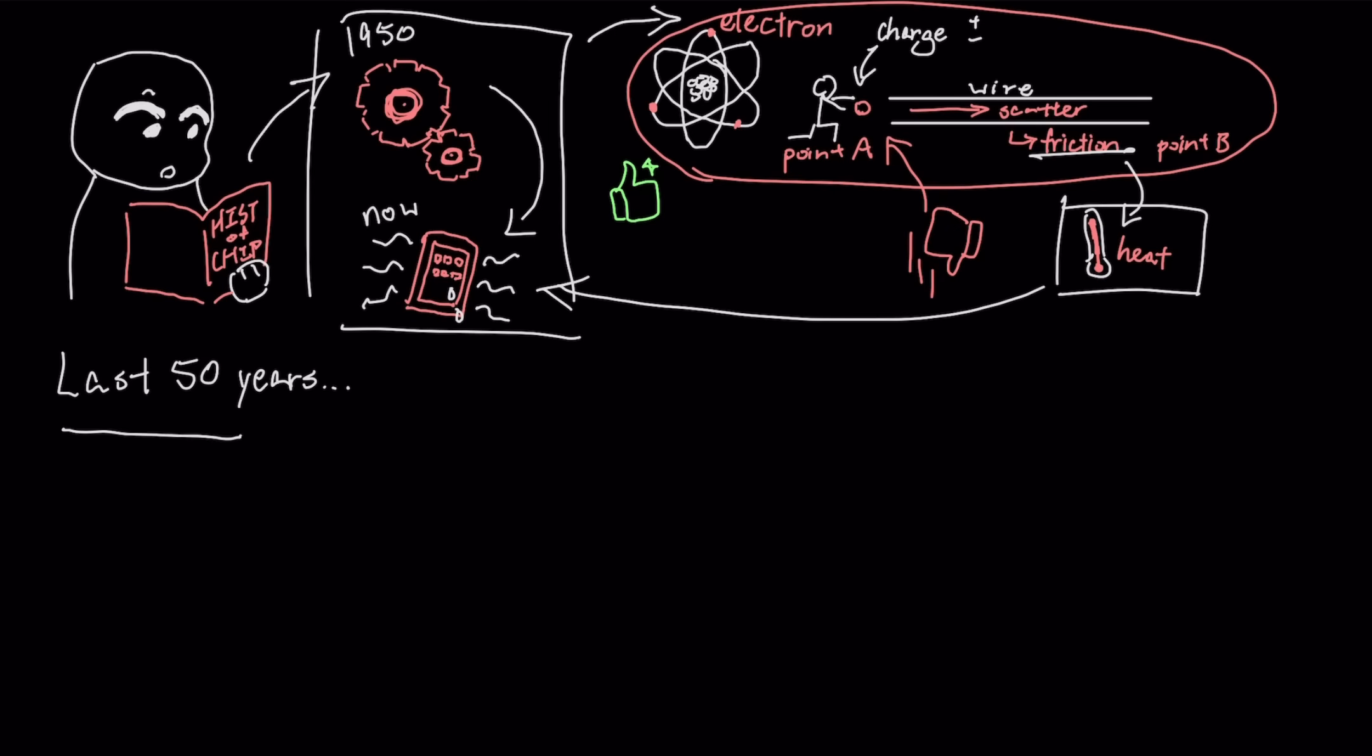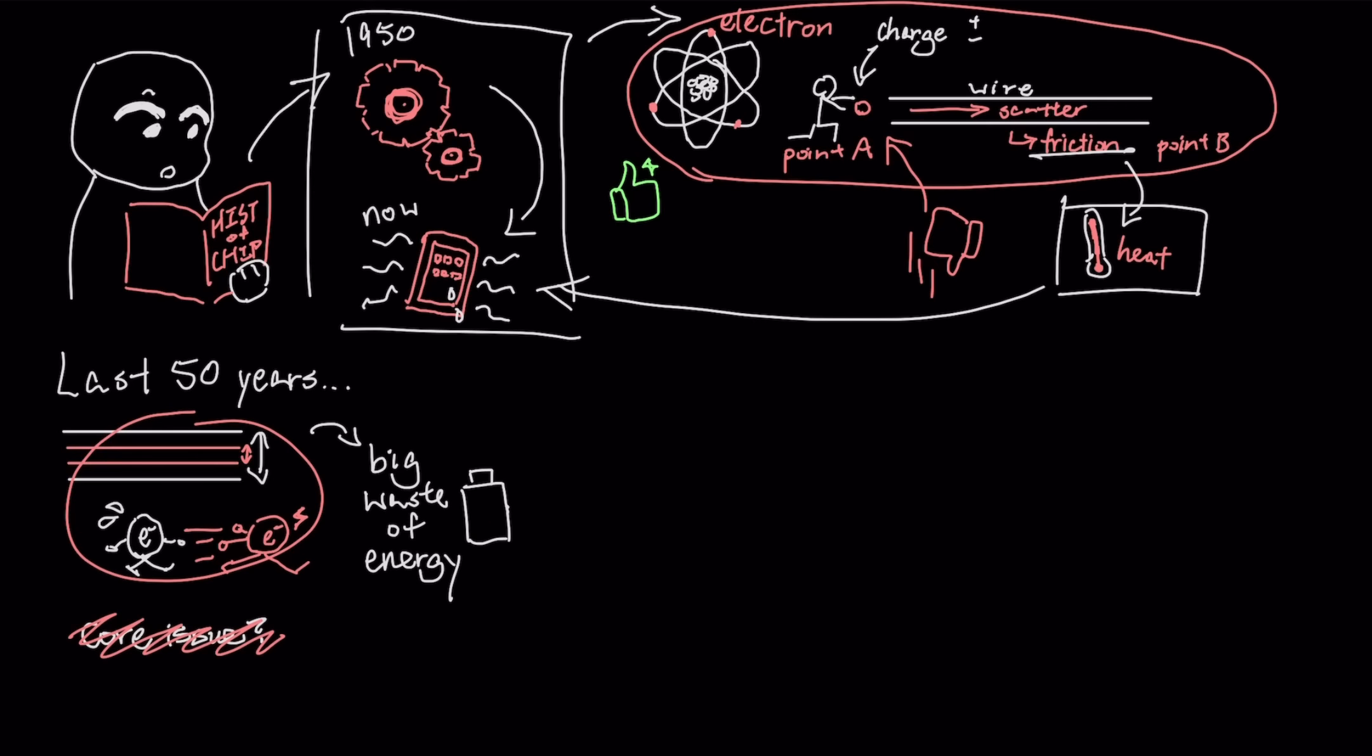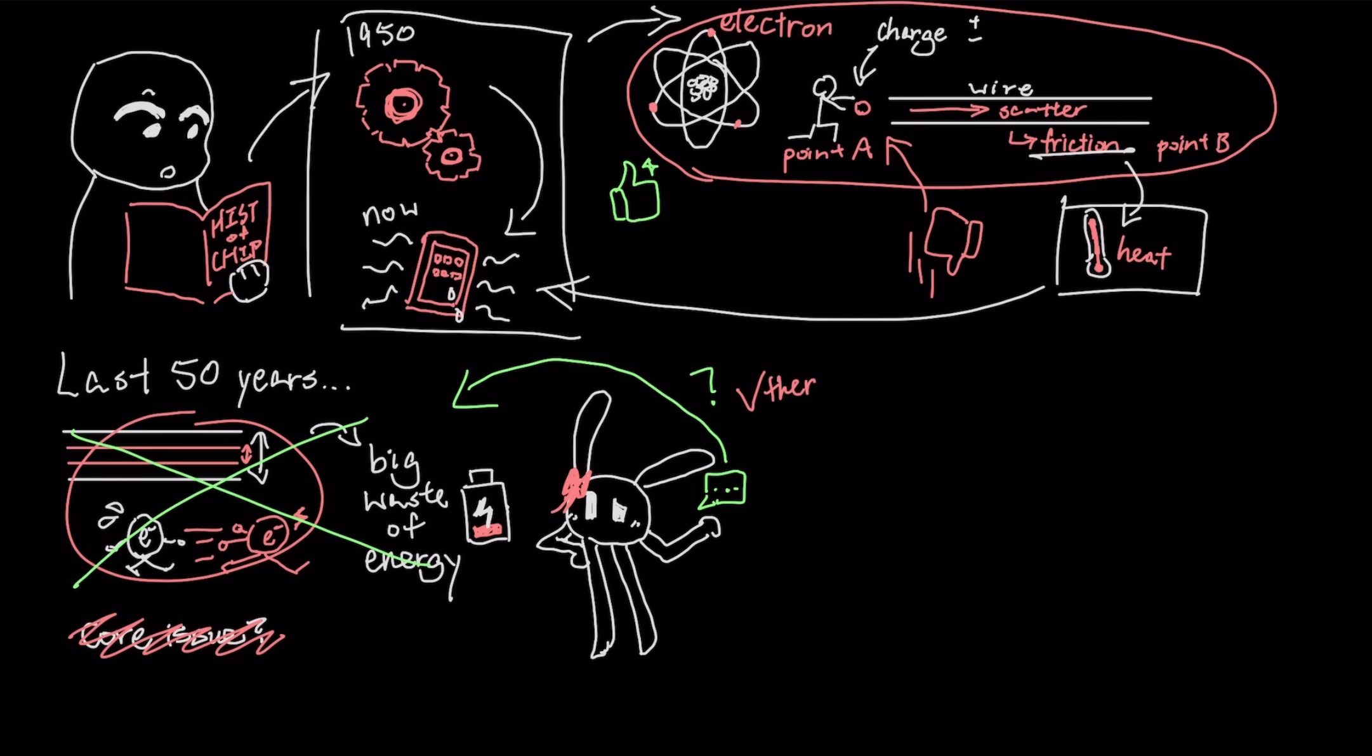We have spent the last 50 years making the wires smaller and electrons faster, but we never addressed the core problem. We are wasting massive amounts of energy just moving things around. So is there a way to communicate without shoving massive amounts of charge through wires? Turns out there is.